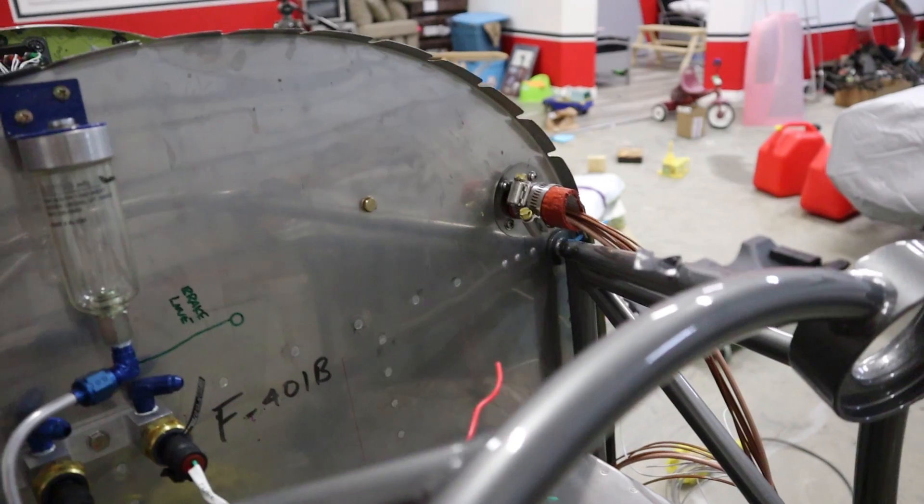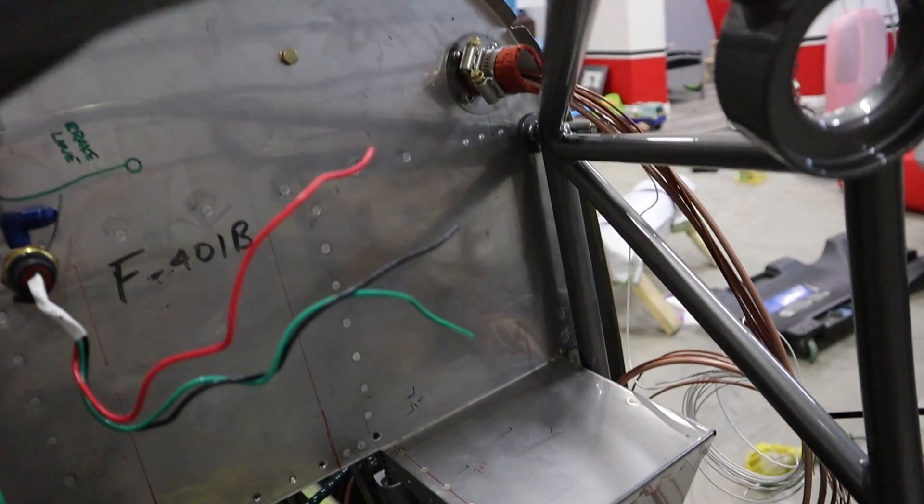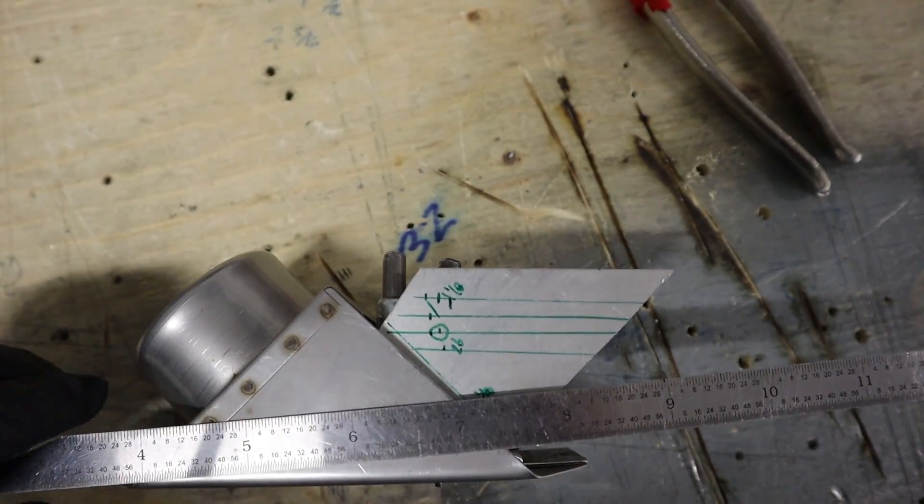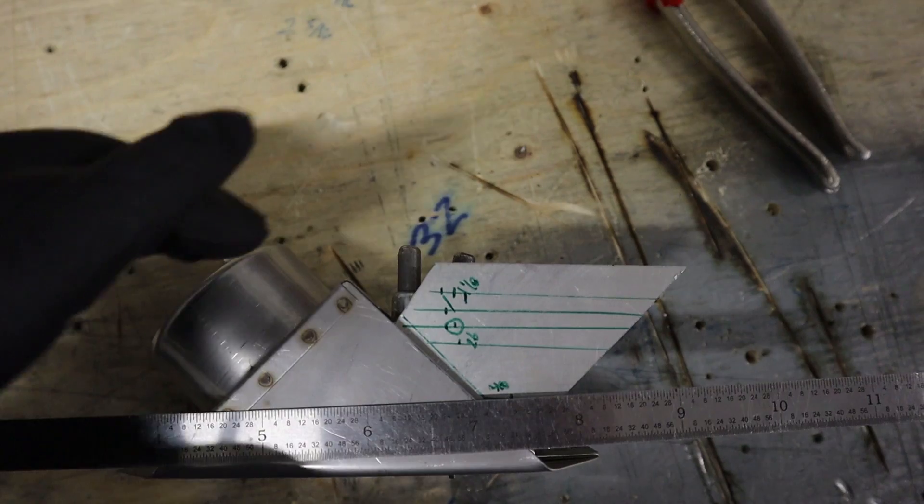And then we're going to put this on the firewall facing up so you can see in the RV4 that space is always kind of limited. So that's essentially why we're doing it.